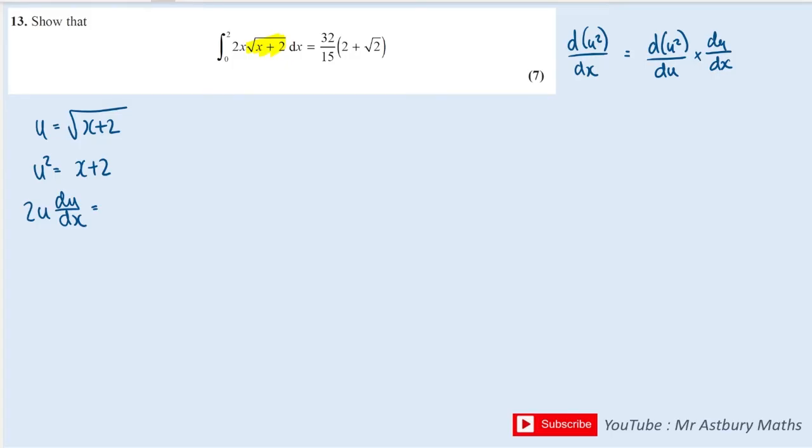That's the left side differentiated. On the right side, x differentiates to 1 and 2 differentiates to 0. Multiplying both sides by dx gives 2u du equals dx.